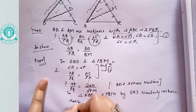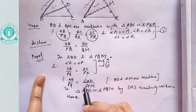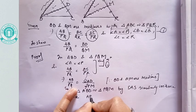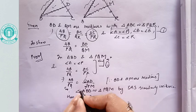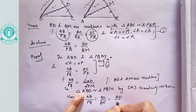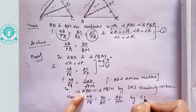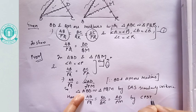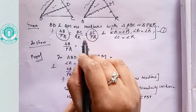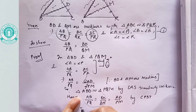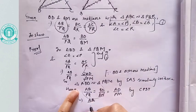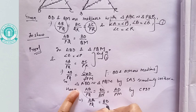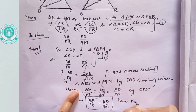Hence, whenever two triangles are similar, their corresponding side ratios are equal. So we get AB/PQ equals BD/QM equals AD/PM, by corresponding parts of similar triangles. This gives us AB/PQ equals BD/QM. Hence proved.